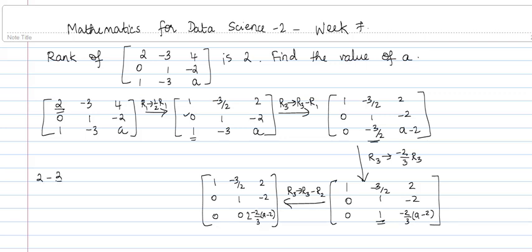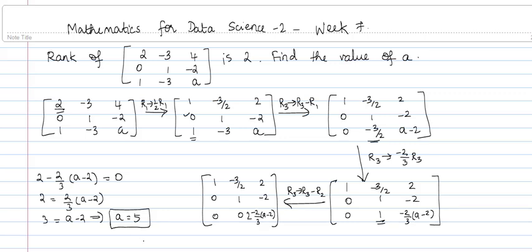So 2 - (2/3)·(a - 2) = 0. This gives 2 = (2/3)·(a - 2), so 3 = a - 2, which implies a = 5. Therefore, if a = 5, the rank of this matrix is 2. Thank you.